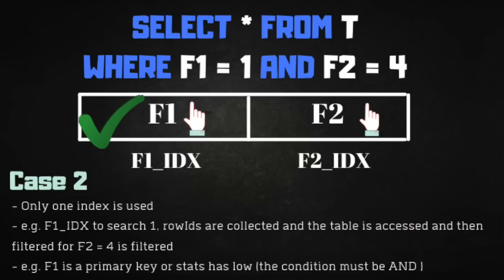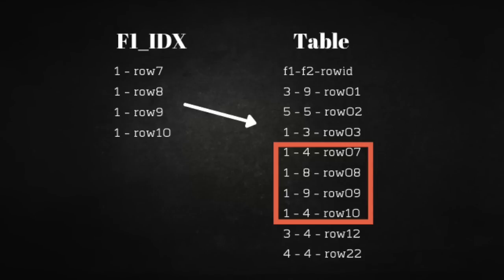Case two is when the optimizer decides to use one index over the other. For example, the database uses only the f1 index, searches all rows for the value 1, collects those rows, then goes directly to the table to fetch them and re-filters the results based on f2 = 4. Databases typically do this when the f2 index returns many rows while f1 returns very few, and the condition is an AND — so anything that doesn't match f1 is already out of the result set.